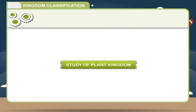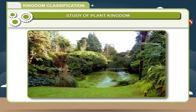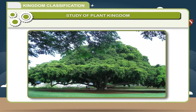Study of Plant Kingdom. The Plant Kingdom comprises about 3 lakh known species all over the world. Plants range in size from unicellular algae to very big trees.